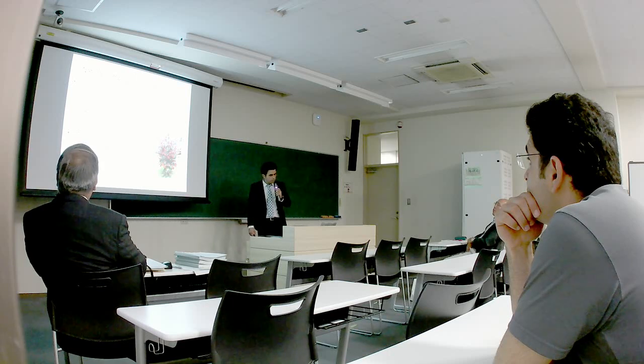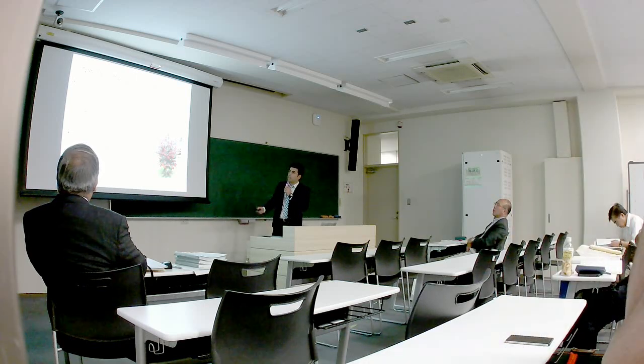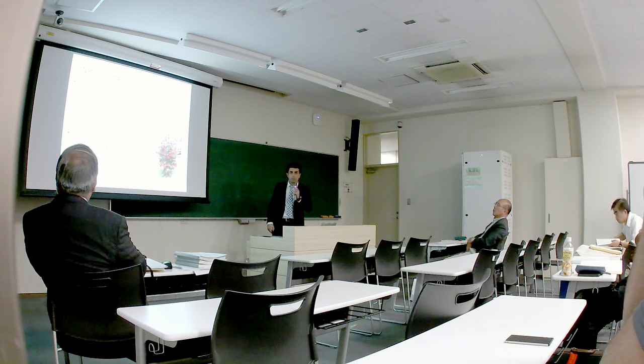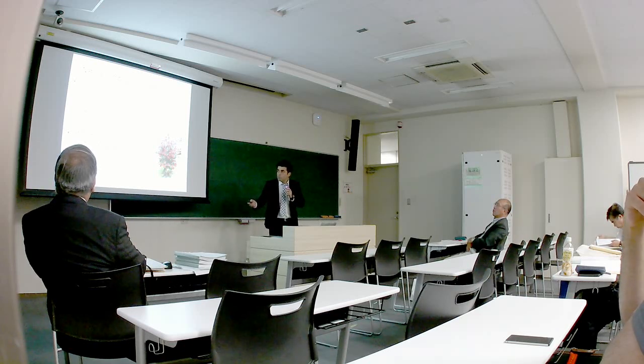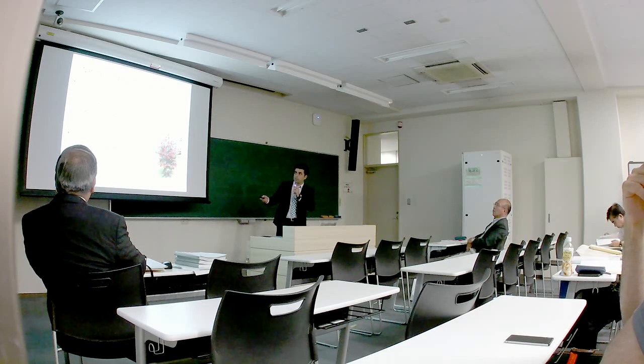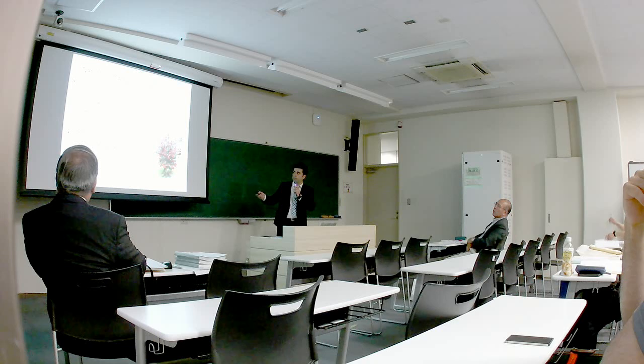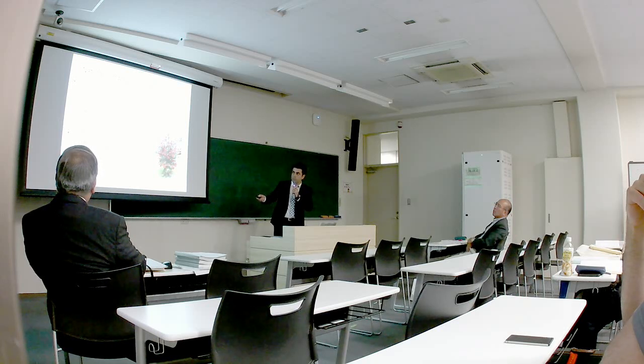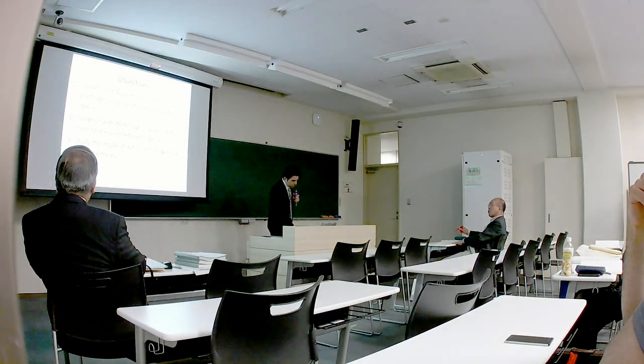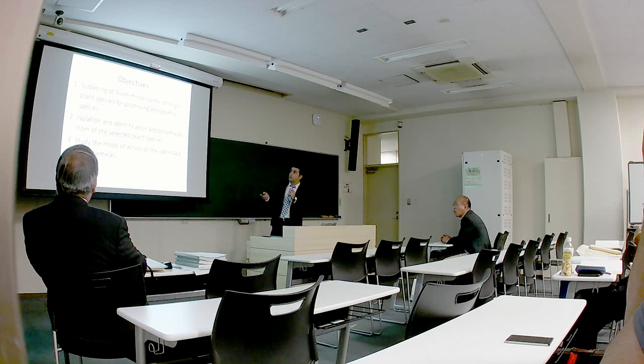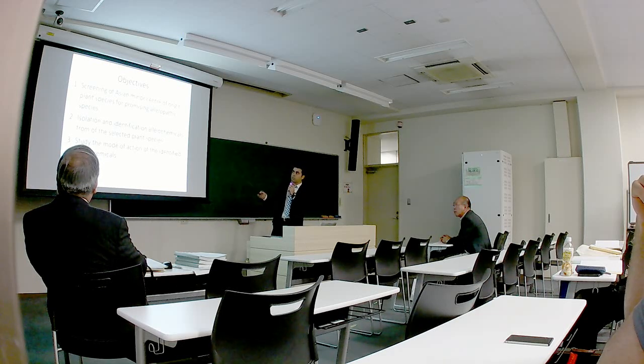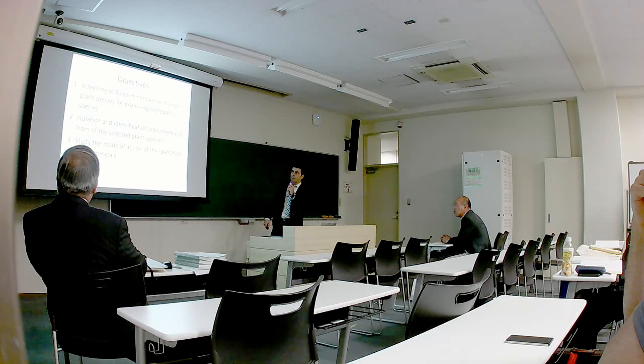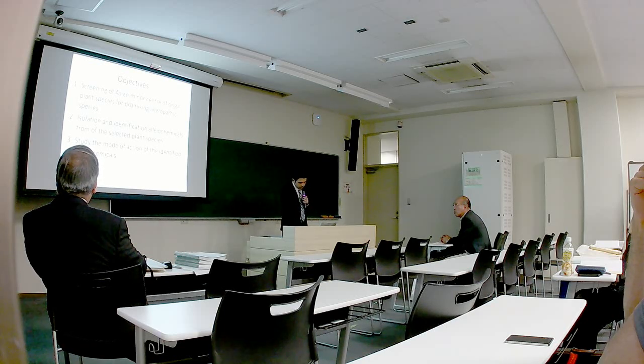Why are they important and why we started looking for new bioactive compounds in allelopathy? Compared to synthetic herbicides and agrochemicals, natural compounds are mostly non-halogenated plant-derived compounds that make them much more bio-degradable. A very good example is leptospermone that was developed by Syngenta company in 1977 from the Bottlebrush tree or Callistemon. Therefore, the objective of this research in general was screening of Asian minor center of origin plant species for the promising allelopathy plant, isolation and identification of the allelochemicals, and also very briefly to study their mode of action.